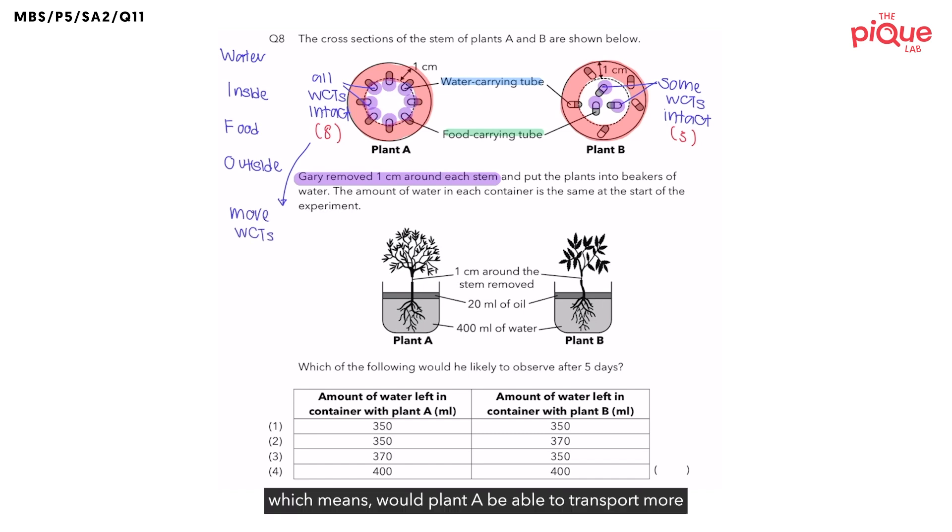Which means, would plant A be able to transport more or less water from the roots to the leaves? It will be able to transport more water. So, therefore, since plant A is able to transport more water, would the container with plant A have less or more water remaining at the end of the 5 days? Now, for the students who are unable to visualize this, let me give you an example.